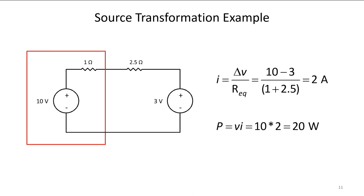Power is equal to V times I, so 10 times 2 is 20 watts. The 10 volt source is delivering 20 watts to the circuit.